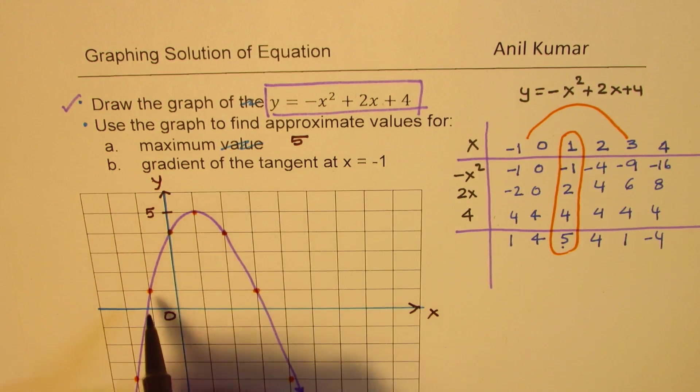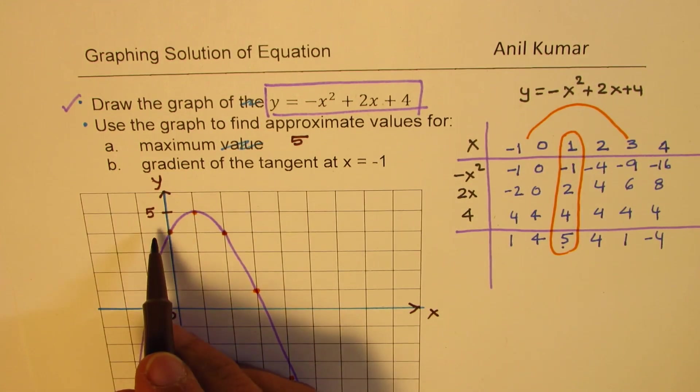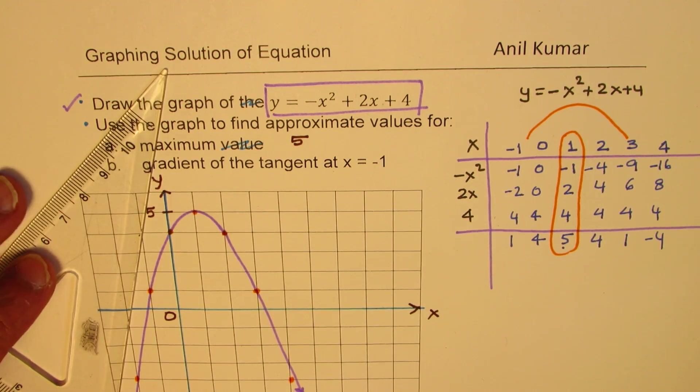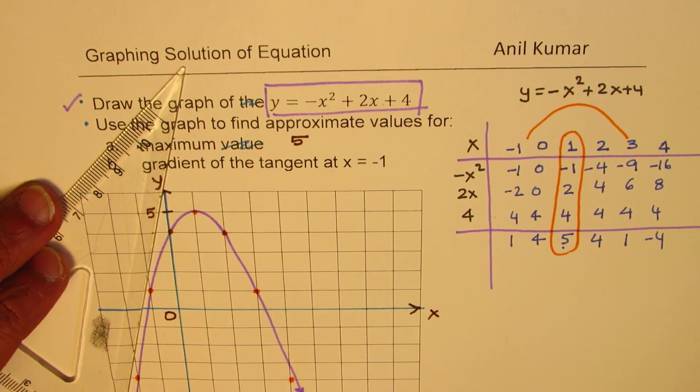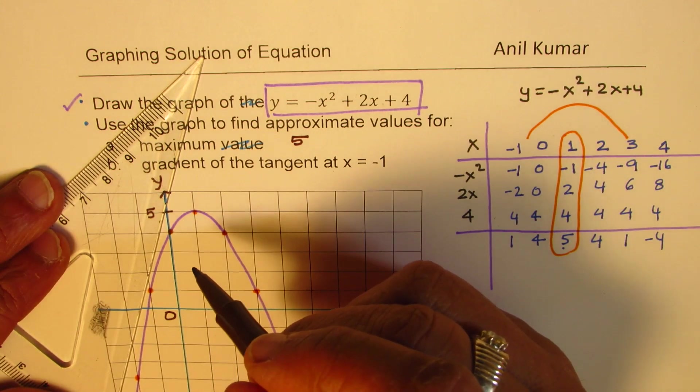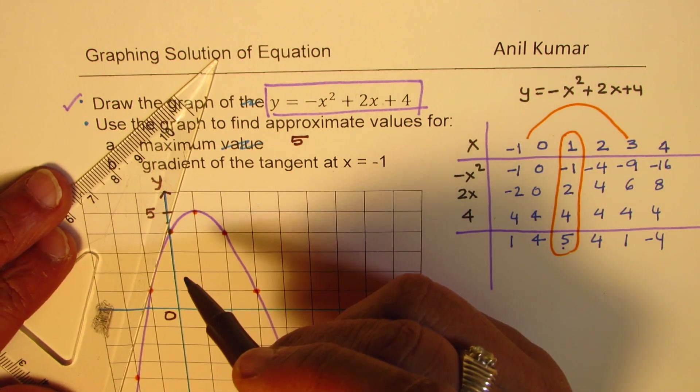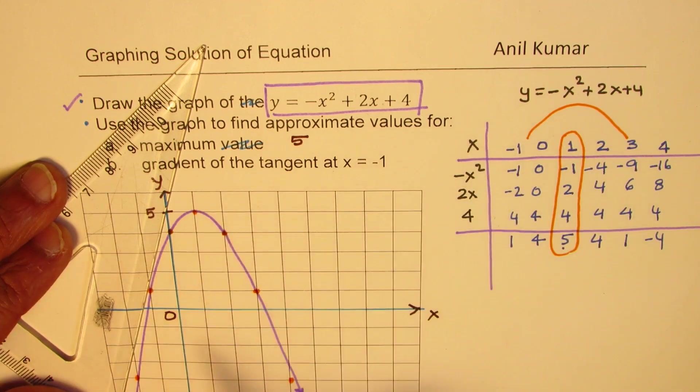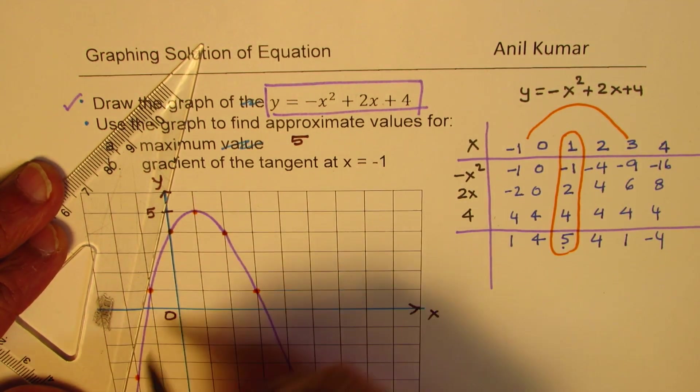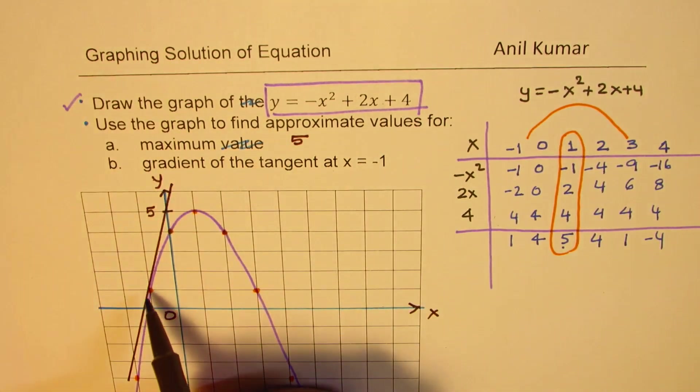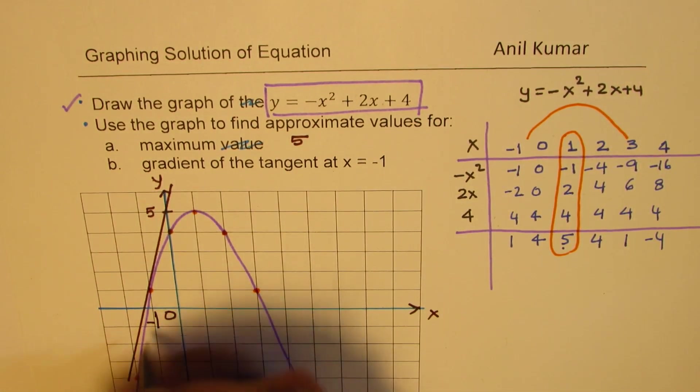Gradient of the tangent at x equals minus 1. At this point, we have to draw a tangent line and then find its gradient. Let's sketch one. We'll find rise over run with the help of this particular tangent. Let's draw a tangent here. You just place this line. That's just tangent at this particular point. This is going to be an approximate value. We have drawn the tangent at x equals minus 1.